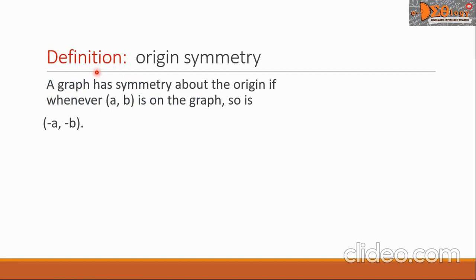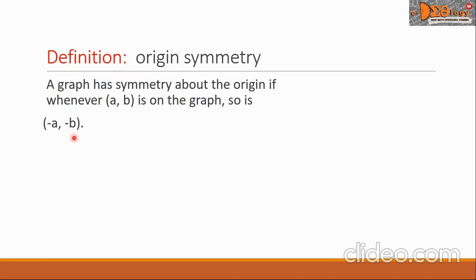Let's go now to origin symmetry. A graph has symmetry about the origin if whenever the point (a, b) is on the graph, so is the point (-a, -b).